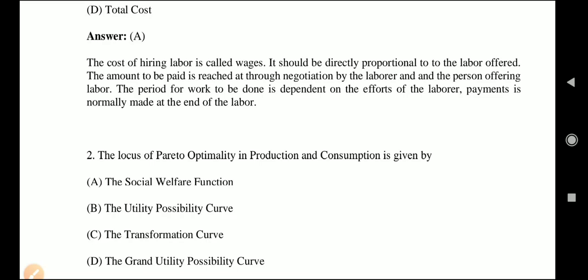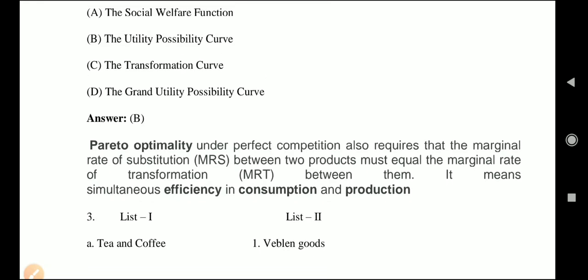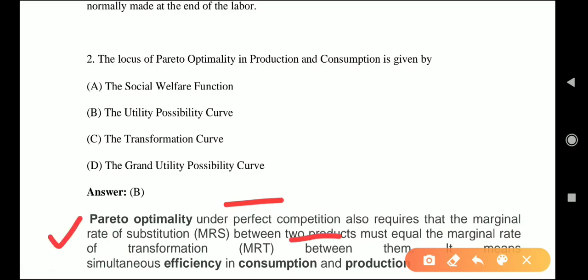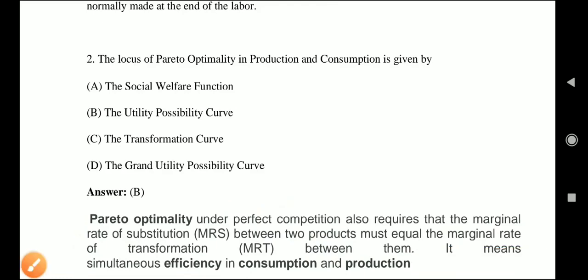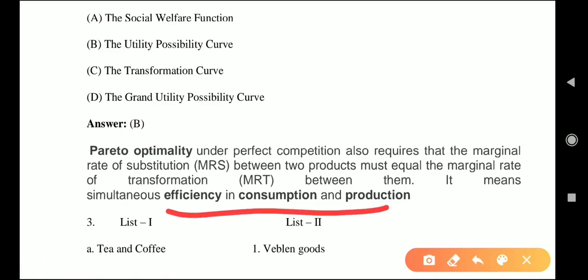Option A is the social welfare function. Option B is the utility possibility curve. Option C is the transformation curve. Option D is the grand utility possibility curve. Let's see the explanation. Pareto optimality under perfect competition requires that the marginal rate of substitution between two products should be equal to the marginal rate of transformation.